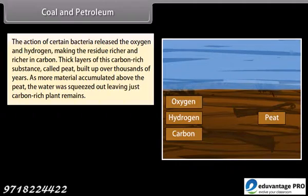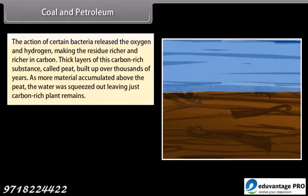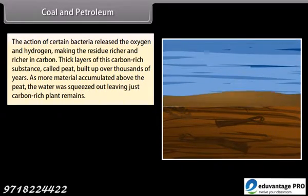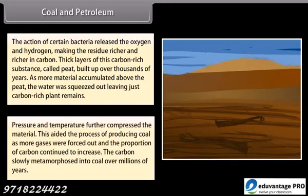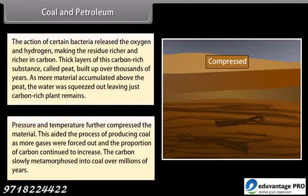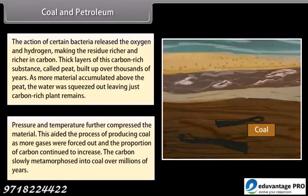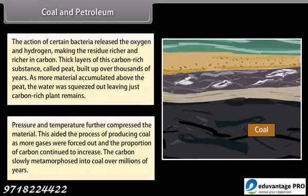The action of certain bacteria released the oxygen and hydrogen, making the residue richer and richer in carbon. Thick layers of this carbon-rich substance called peat built up over thousands of years. As more material accumulated above the peat, water was squeezed out leaving just carbon-rich plant remains. Pressure and temperature further compressed the material, aiding the process of producing coal as more gases were forced out and the proportion of carbon continued to increase. The carbon slowly metamorphosed into coal over millions of years.